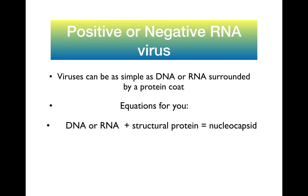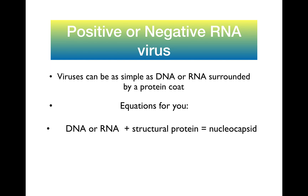Viruses themselves can be as simple as DNA or RNA surrounded by a protein coat. Viruses do not have to be anything more complicated, though they often are. DNA or RNA plus any kind of structural protein that would form a nucleocapsid or a naked capsid — just DNA with a little bit of protein — is enough to be called officially a virus.